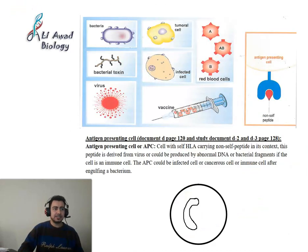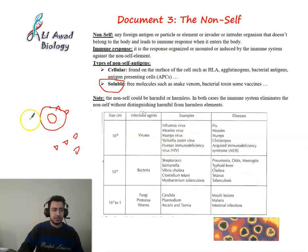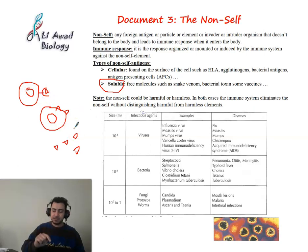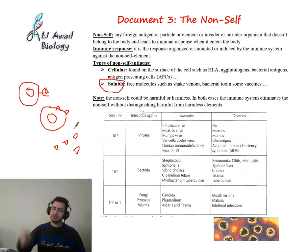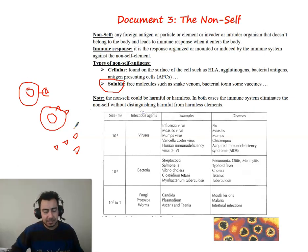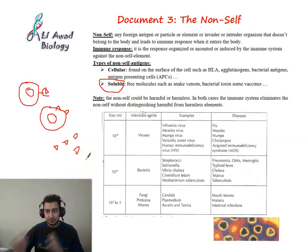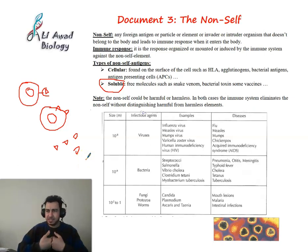An antigen presenting cell is a cell that has on its surface self HLA with a non-self peptide in its context. A cell with self HLA and a self peptide is the immunological self. Now, harmful particles that invade our bodies and cause diseases are called microbes, because they are seen under the microscope.